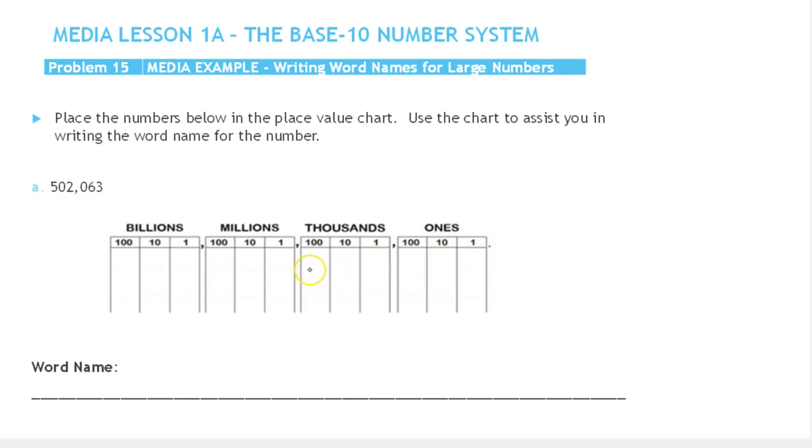This five is going to be in the hundred thousands place: 5-0-2-0-6-3. I know I've done this correctly because my last digit ended up in the ones place in the ones subgrouping.